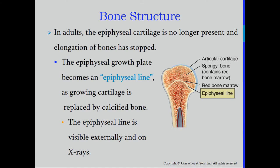As growing cartilage is replaced by calcified bone, in an adult the line that would appear open on an adolescent's x-ray is now closed — a clear indication that person is no longer growing. The epiphyseal line is visible externally and on x-rays.